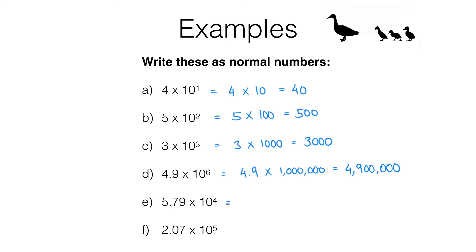In part E, we've got 5.79 multiplied by 10 to the power of 4, which is 10,000. So 5.79 multiplied by 10,000 gives us 57,900.